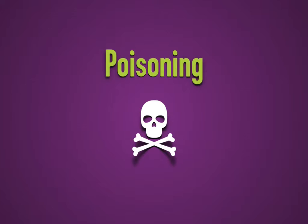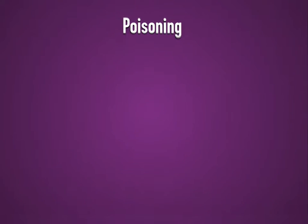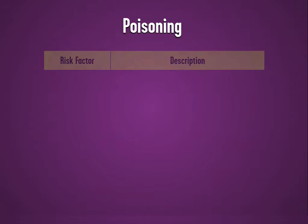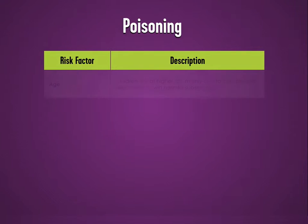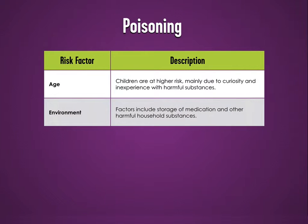Now let's look at poisoning. Risk factors for poisoning include age — children experience a unique risk because of their curiosity and inexperience with harmful substances — and environment. Environmental factors such as storage of medication and other harmful household substances impact the risk of injury.